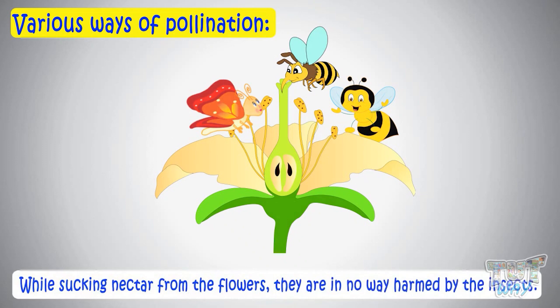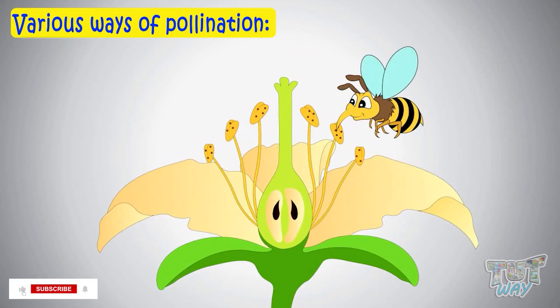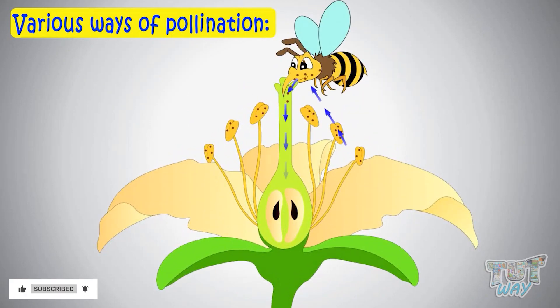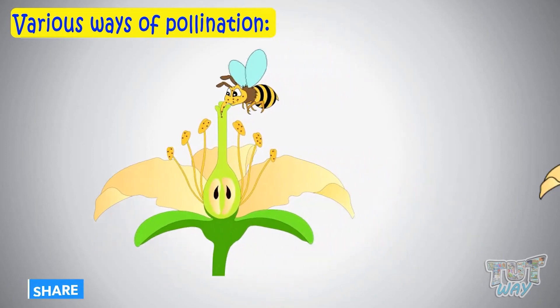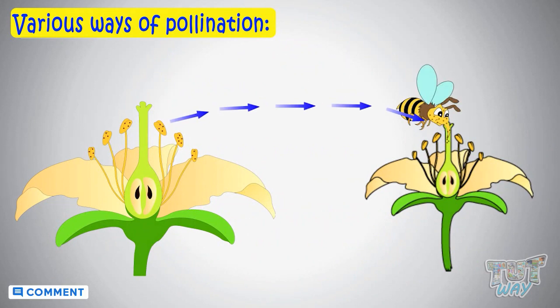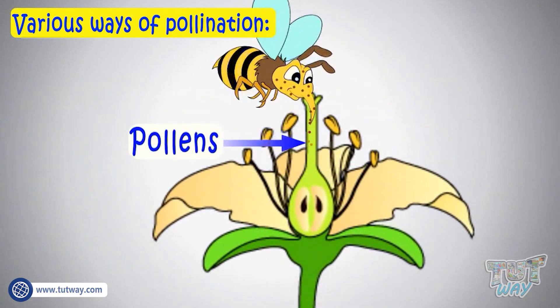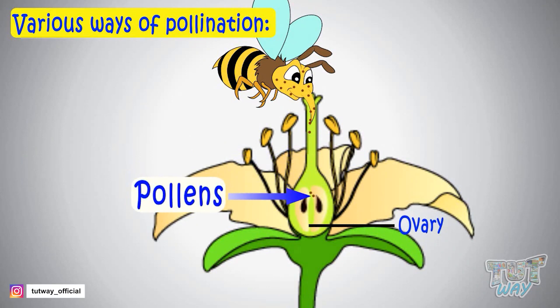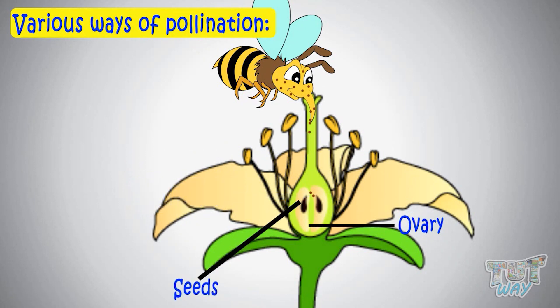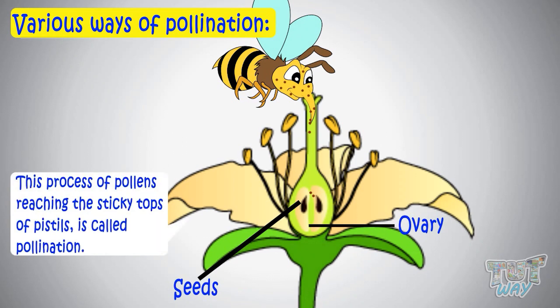Butterflies, bees, and many other insects feed on the nectar, so they visit the flower to suck nectar. While feeding on the nectar present in the flowers, pollens from the anther get attached to the body of the insects. When these insects visit another flower for nectar, pollens get to the sticky top of the pistil, and by way of long tubes called the style, pollens reach the ovary where ovules are present, and fertilization occurs, leading to the formation of seeds. So this process of pollens reaching the sticky tops of pistils is called pollination.